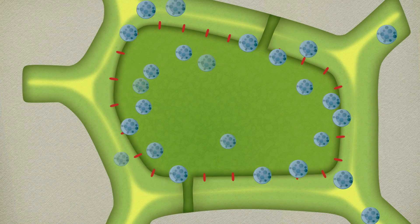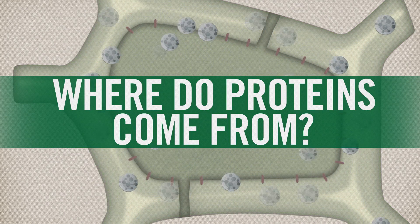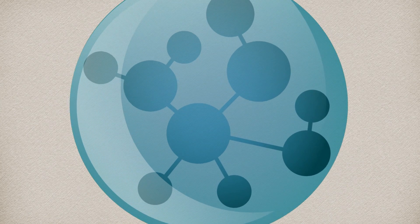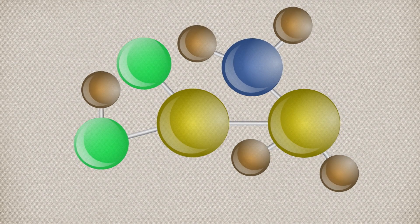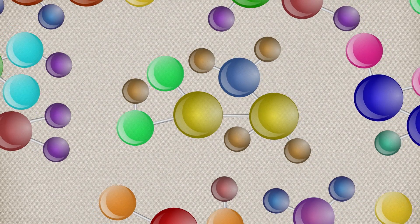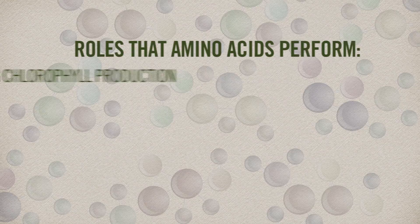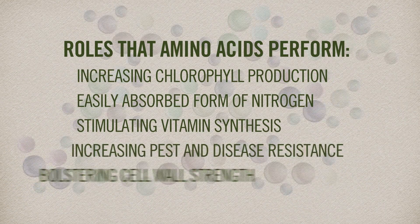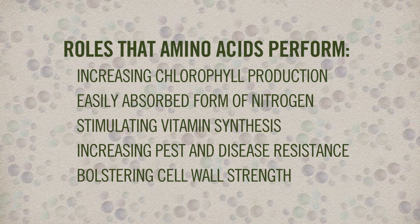From supporting cellular strength to stimulating metabolic processes to transporting nutrients, proteins are used in just about every biological process in turfgrass growth. Proteins are formed by various combinations of amino acids — specific types of organic molecules that are one of the fundamental building blocks of life. Amino acids are essential ingredients in protein synthesis, and more than 20 are required for critical biological processes, including increasing chlorophyll production, providing an easily absorbed form of nitrogen, stimulating vitamin synthesis, increasing pest and disease resistance, and bolstering cell wall strength.